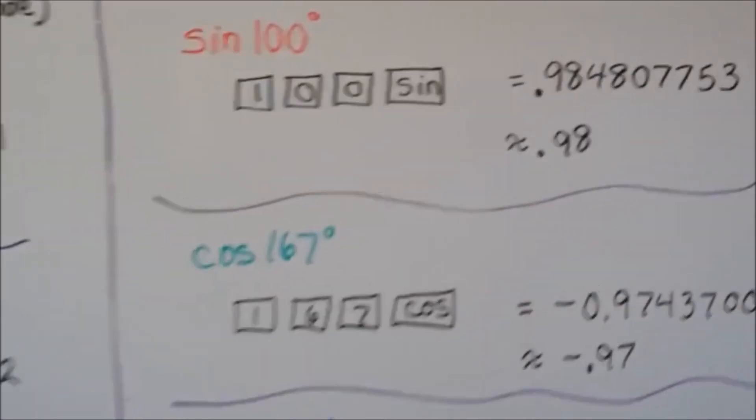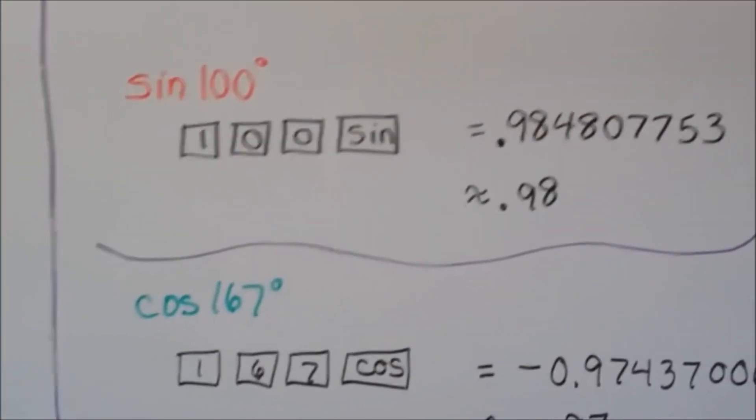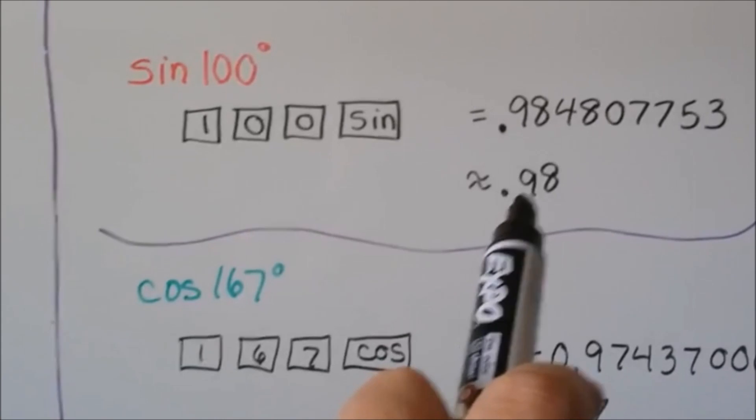For the sine of 100 degrees, we put in 1, 0, 0, hit the sine button. We can round it to 0.98.